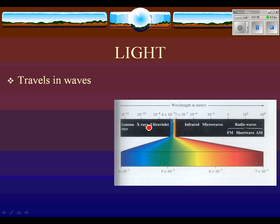The electromagnetic spectrum includes infrared waves, microwaves, radio waves, and ultraviolet. But then there's this really small part of the spectrum that are visible light waves. We can only see a very small part of the electromagnetic spectrum. There are other organisms that can see infrared, and some theory suggests some can see ultraviolet. So light travels in waves.